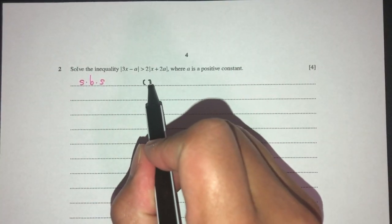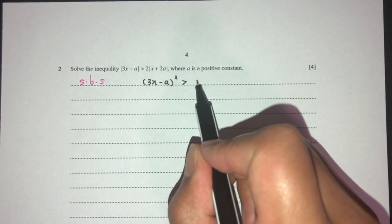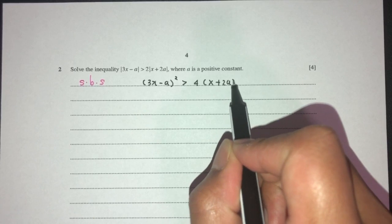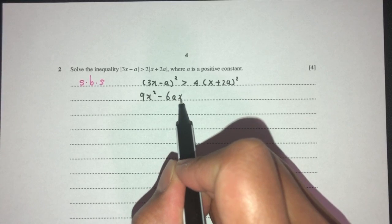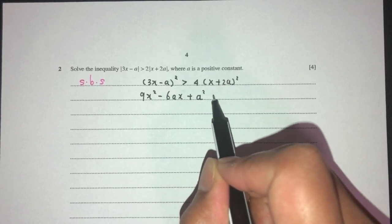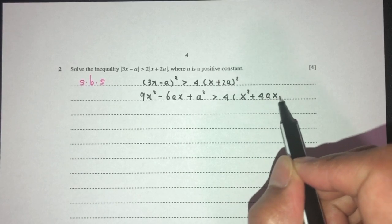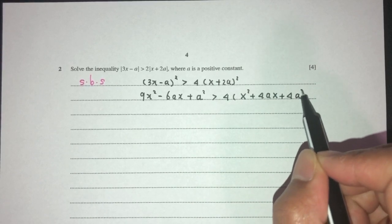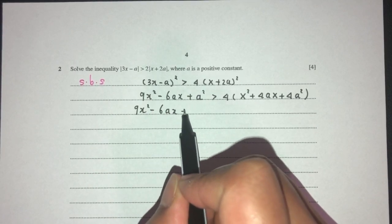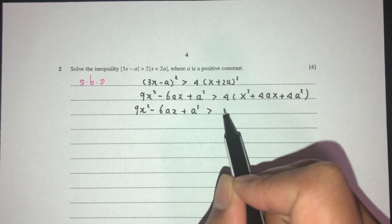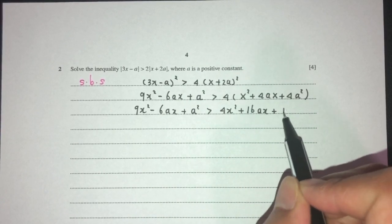We have to know how to expand this. That should become (3x-a)^2 more than 2 square is 4 times (x+2a)^2. Expand, you will have 9x^2 - 6ax + a^2 more than 4, that should be x^2 + 4ax + 4a^2.